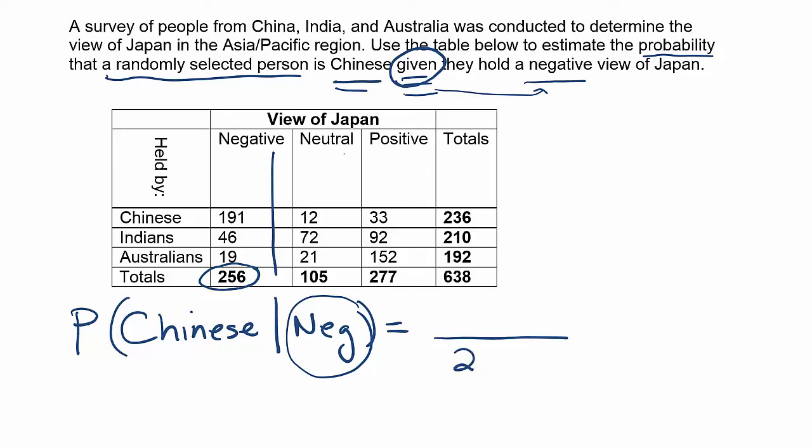So that's going to be our denominator — we're going to write down 256, because that's the total number of people in the universe that we're interested in. We only care about the ones in the study who had a negative view of Japan. So we've got our denominator.